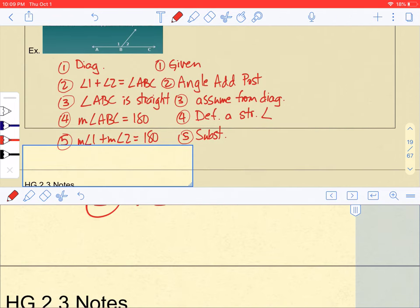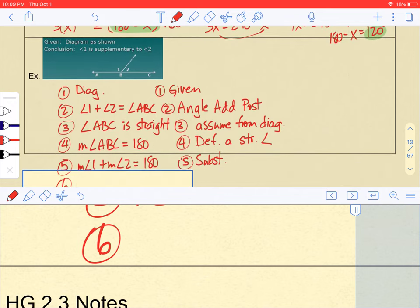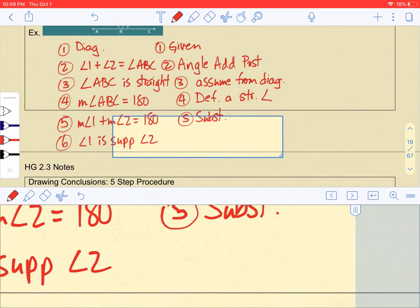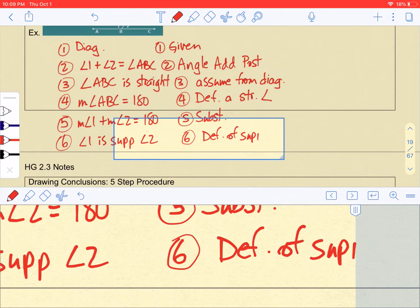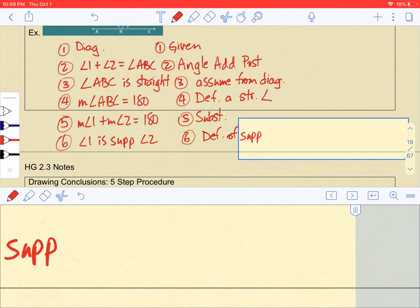Kind of a long proof here. And line six: angle one is supplementary to angle two. I'm pretty sure most of your proofs are going to be a lot shorter than this. This is our definition of supplementary angles—if two angles add up to 180 degrees, they are supplementary.